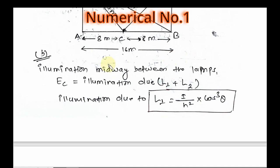Now, illumination at point C, the midpoint between the lamps, equals illumination due to L1 plus L2. Illumination due to L1 is I divided by h squared times cos cubed theta, where I equals 100 and h equals 6.